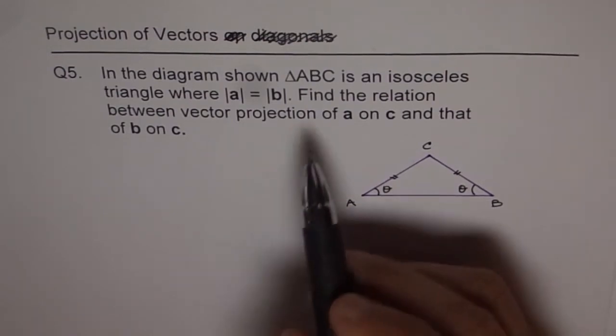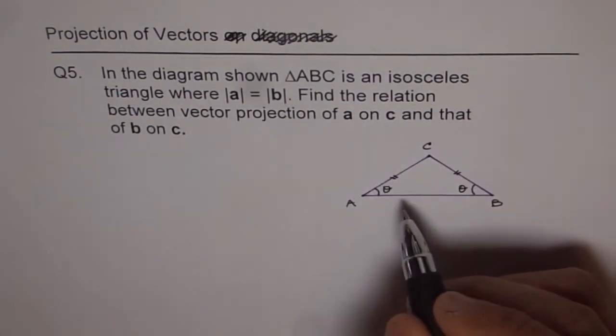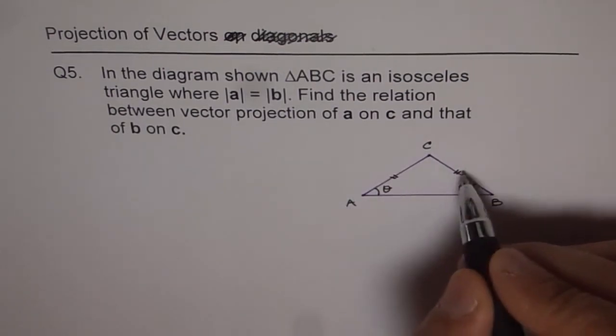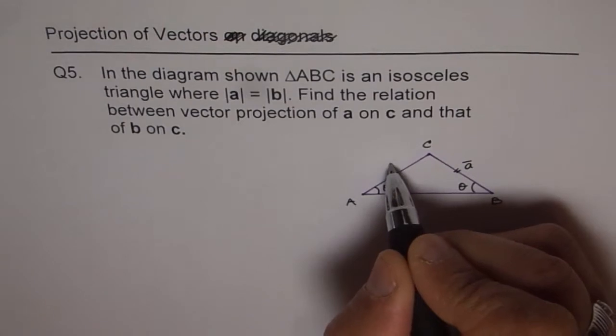Now when you do vector projection of A on C, what does it mean? So vector A is, we are trying to say A is the opposite side and B is this side.